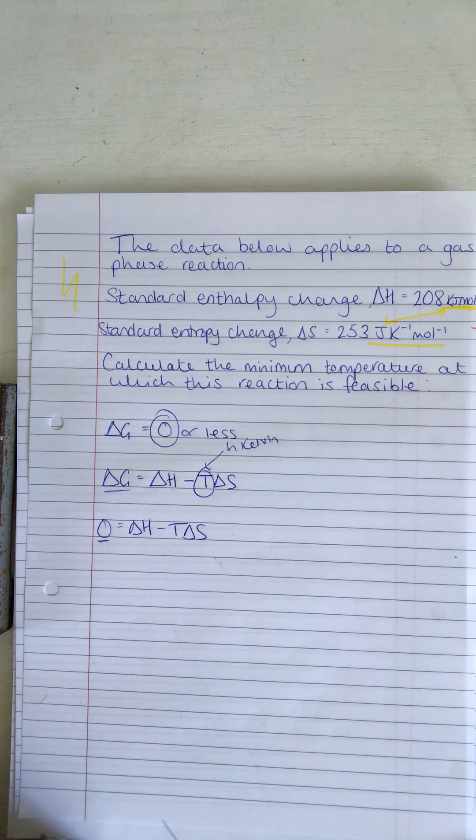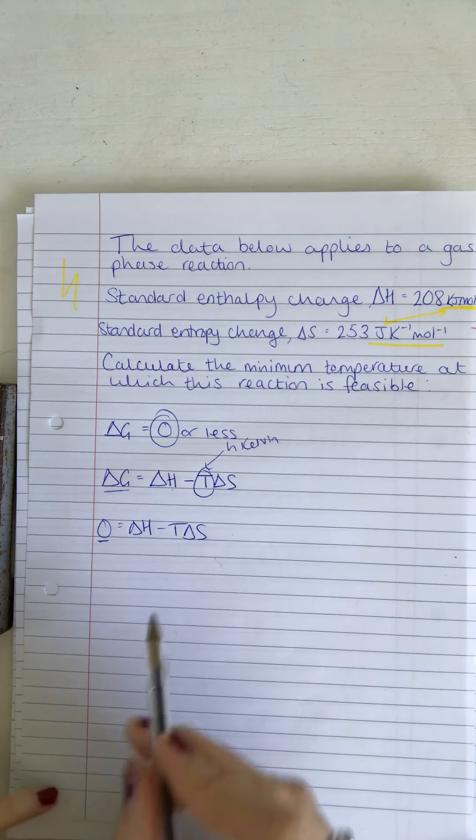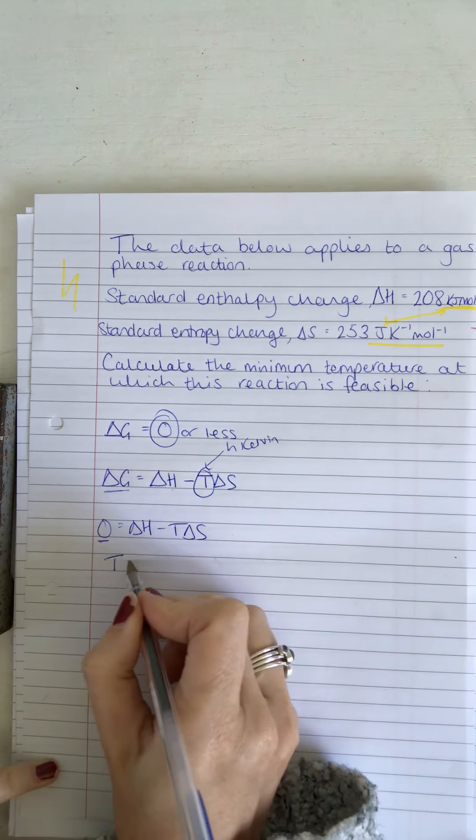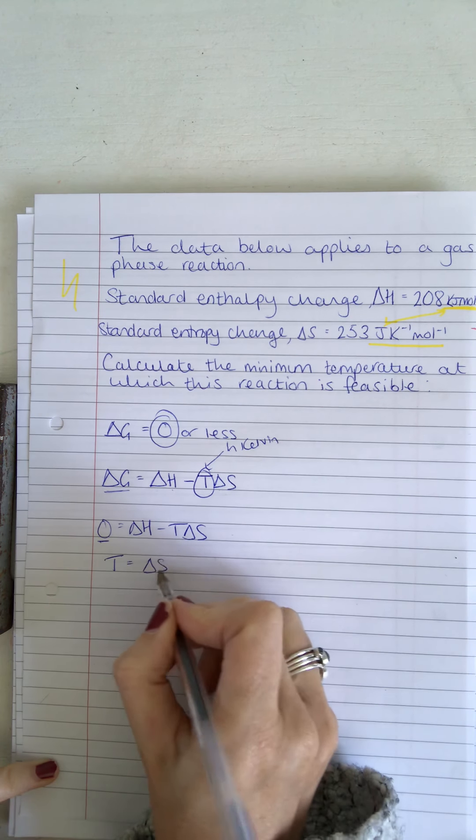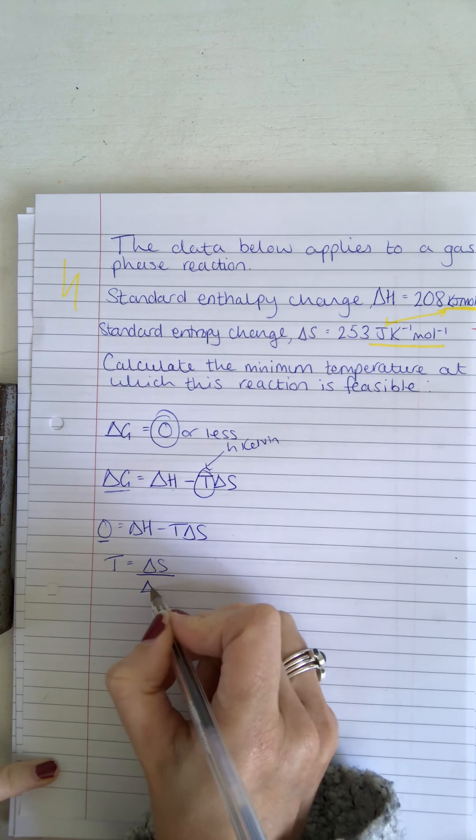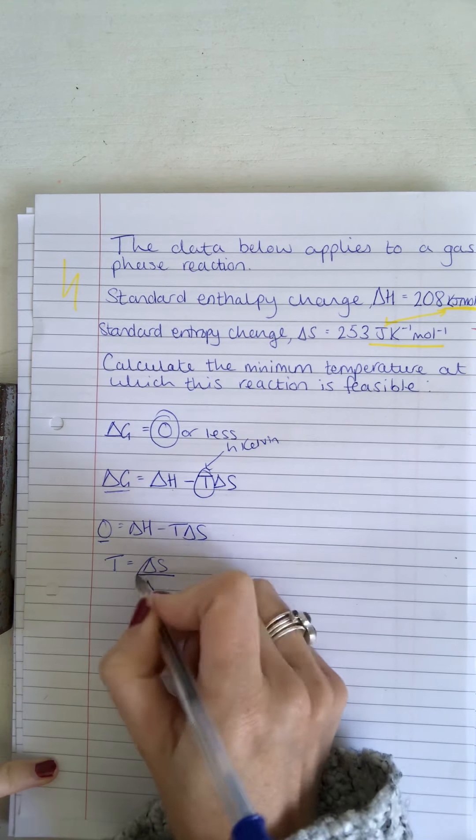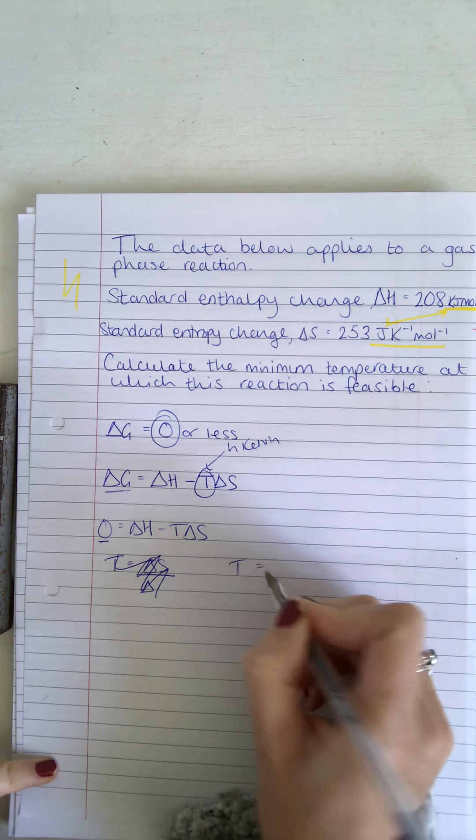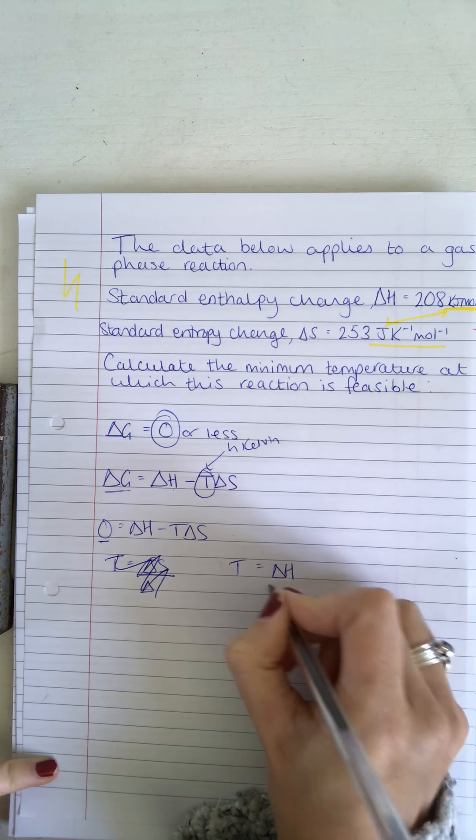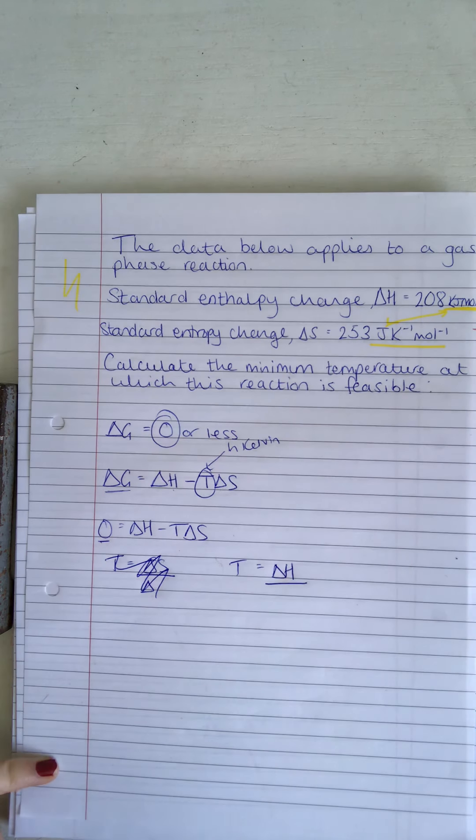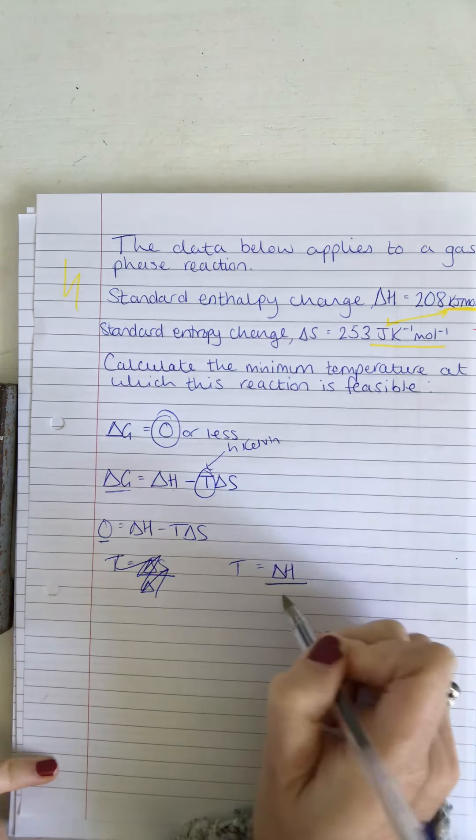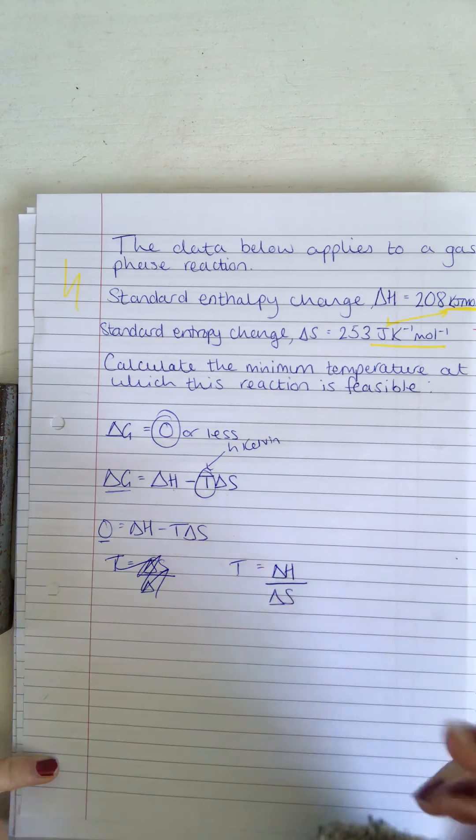Okay, so then we can say T equals change in enthalpy divided by the change in entropy, and then we can plug in our values.